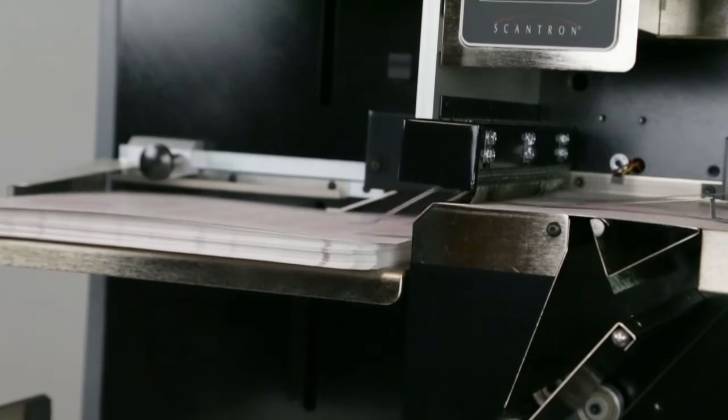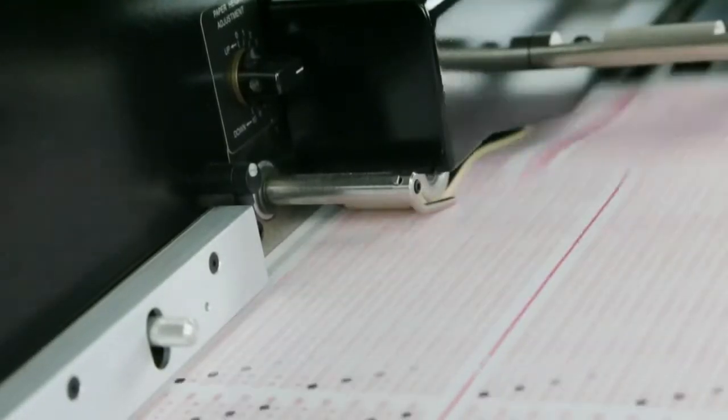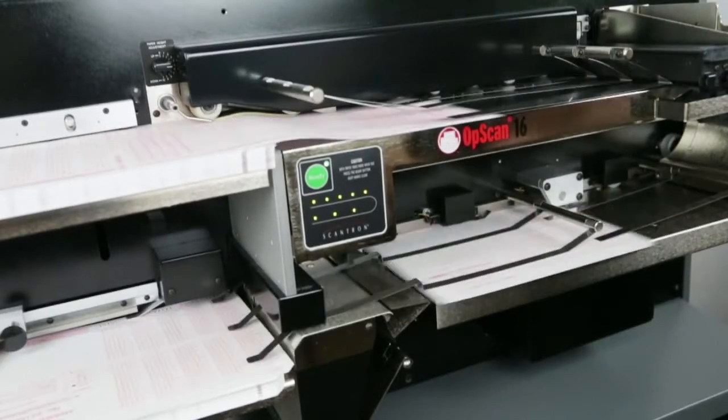And if a document isn't in the correct position before scanning, the OpScan 16's Active Desk Queue Station activates rollers that align the document before scanning.